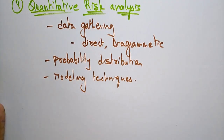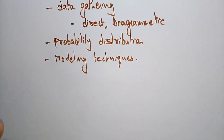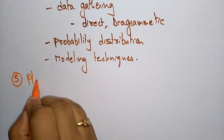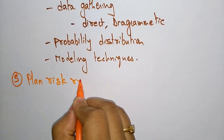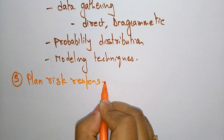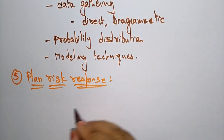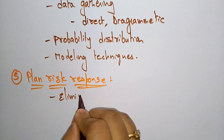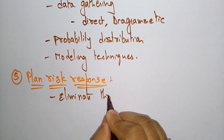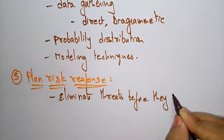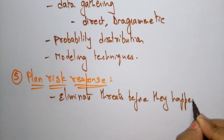The fifth process is Plan Risk Response. In plan risk response, the first step is to eliminate threats before they happen. By starting to address threats early, you decrease the impact of those threats on the project.